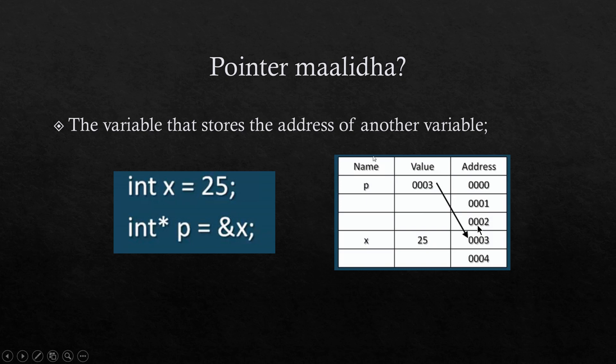The x will be the pointer to the pointer. The asterisk (*) can also be the pointer to the pointer. So if you start to enter the pointer, you can use the pointer to the pointer.